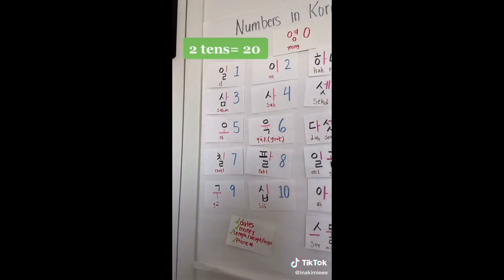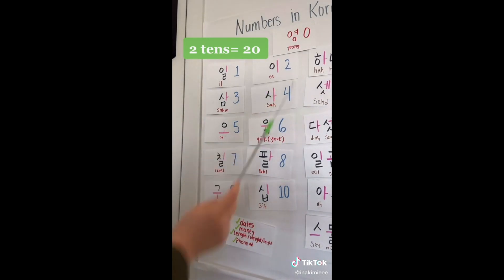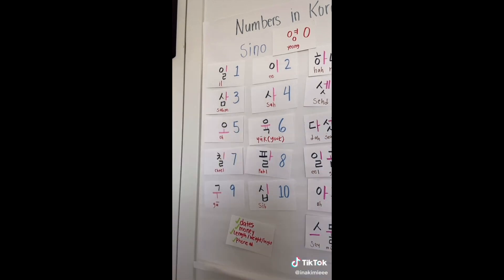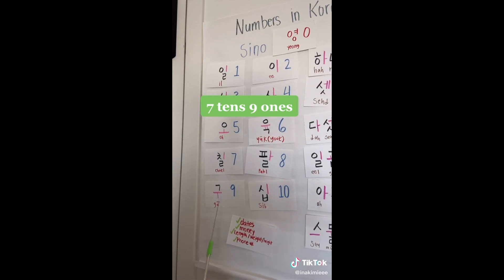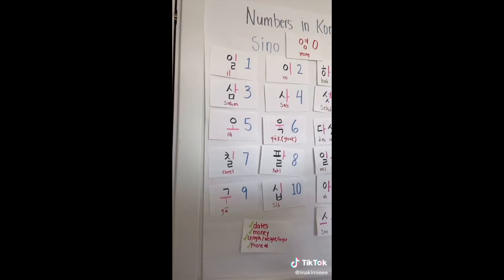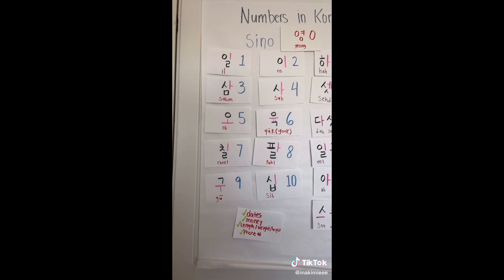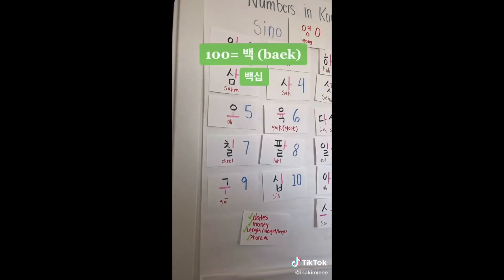For 20, it has two tens, so you would simply say 이십. 25 would be 이십오. The rest follows the same rule. If you want to say 79, you would have 7 tens and 9, so 칠십구. For example, 81 would be 팔십일, 99 would be 구십구, and 100 is 백.